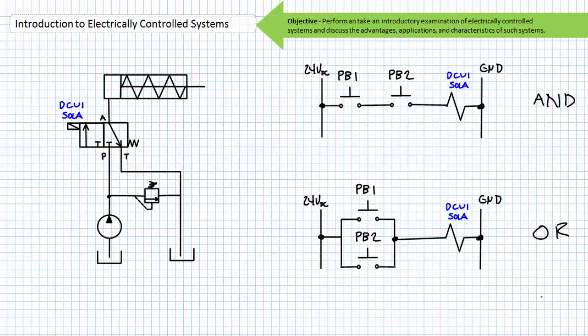These two control systems both make use of two inputs — the two pushbuttons — and one output, the solenoid. There are no relays internal to the ladder logic, yet the two systems function in radically different manners. For the first system, both pushbutton 1 and pushbutton 2 must be simultaneously pressed for the cylinder to extend. For the second circuit, either pushbutton 1 or pushbutton 2 can be pressed. The ladder logic itself — the electrical relationship and physical wiring of the two switches — is the internal construction of the system and dictates its behavior. Consider the maintenance, repair, upgrade, and modification of hardwired electrically controlled systems.